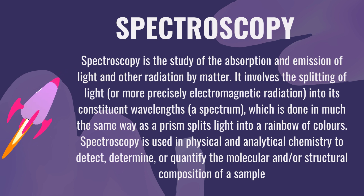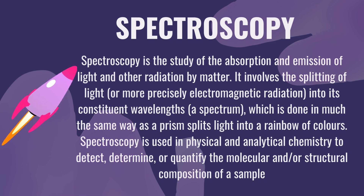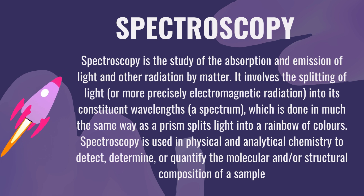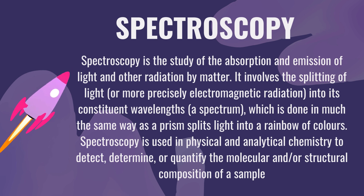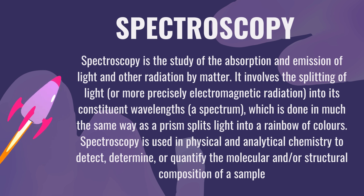Do you know what spectroscopy is used for? Spectroscopy is used in physical and analytical chemistry to detect, determine, or quantify the molecular and/or structural composition of a sample. Each type of molecule and atom will reflect, absorb, or emit electromagnetic radiation in its own characteristic way.